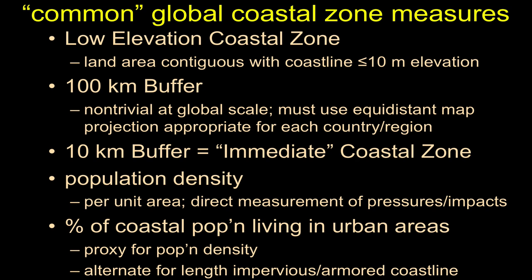Another common definition is a linear distance inland — like a 100 kilometer buffer — chosen basically because 100 is a round number, 10 seems too small, and 1,000 seems too big. At global scale, though, that distance becomes non-trivial and is highly dependent on our map projection. Those who've taken GIS will appreciate that this can easily cause issues, particularly at the northern and southern extremes of coastal zones around the world.